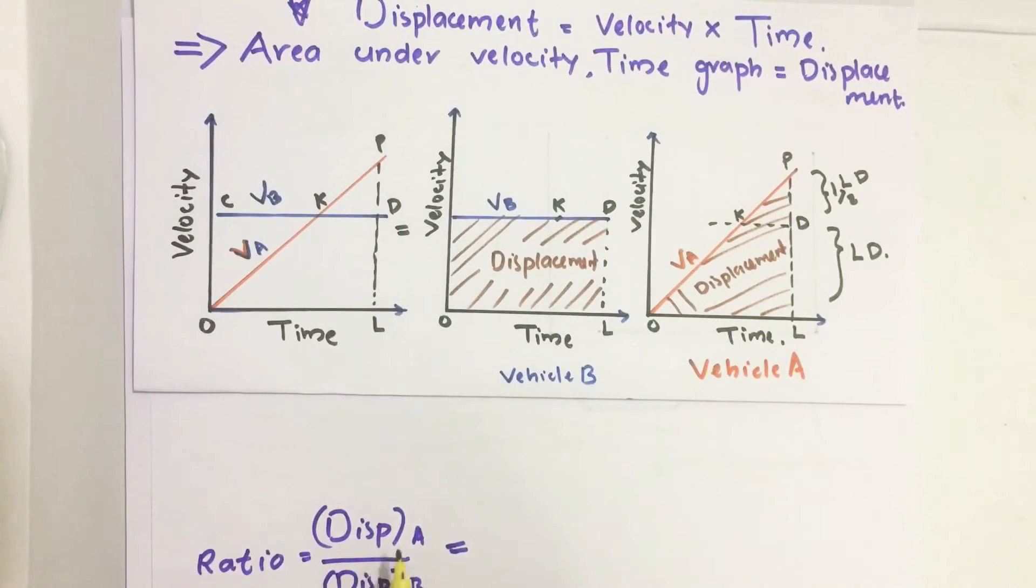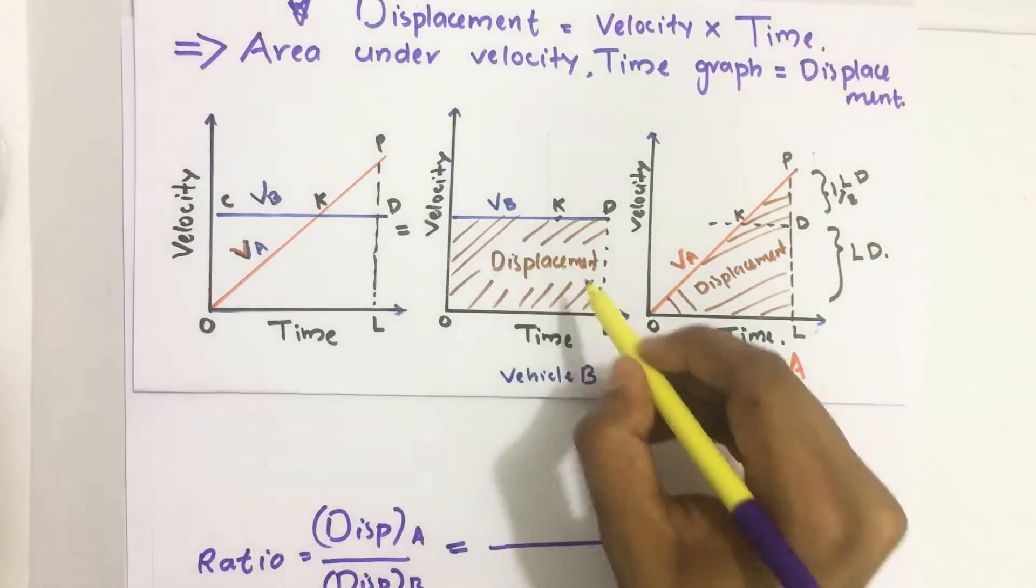The ratio of displacement of A to the displacement of B is equal to this area.